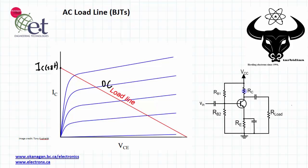the VCC voltage across RC and RE. In saturation we can assume that VCE is very low, as close to zero for an ideal amplifier. So IC sat is going to be VCC over RC plus RE.